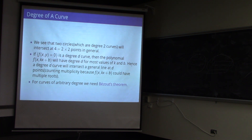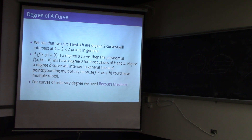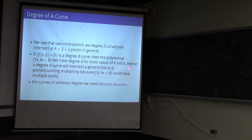For any degree d curve defined by f(x,y) = 0, you can look at the intersection with the line y = kx + b by substituting. This gives a degree d polynomial, which for most values of k and b will have d solutions. So a degree d curve will intersect a general line at d points, counting multiplicity. This is a special case of Bezout's theorem, which talks about the intersection of curves.